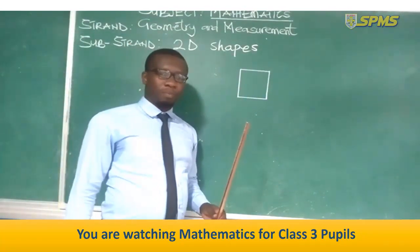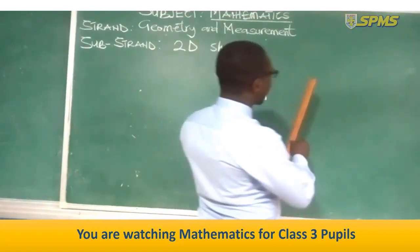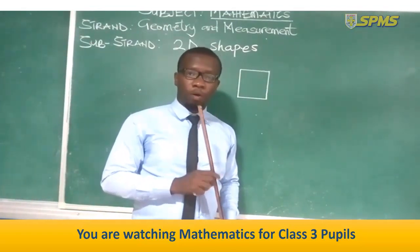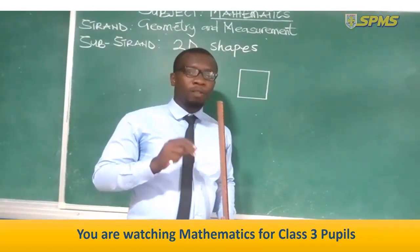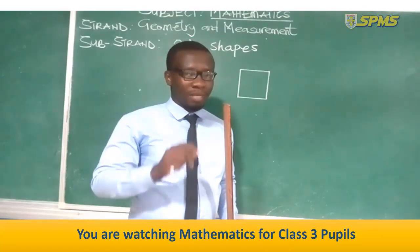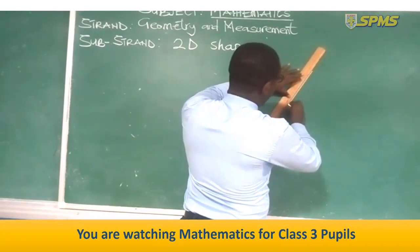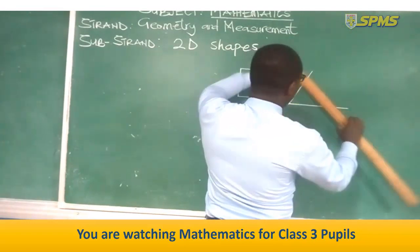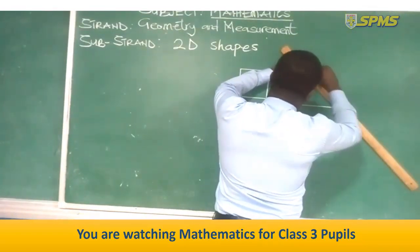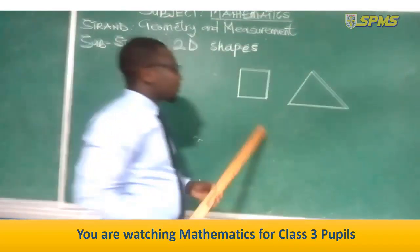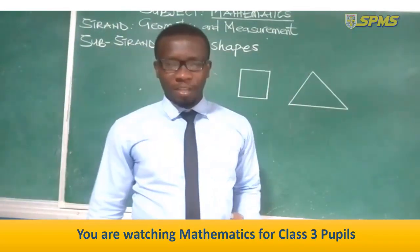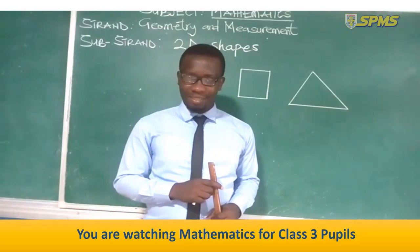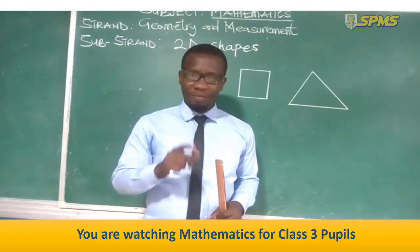Let's try another shape — triangle. A triangle can have all sides equal, or two sides equal, or all sides having their own measurement. Continue drawing more 2D shapes in your jotter. I hope you enjoyed the lesson. See you soon. Stay safe. Bye.